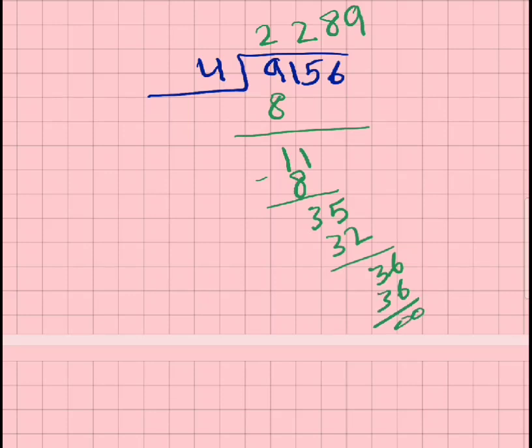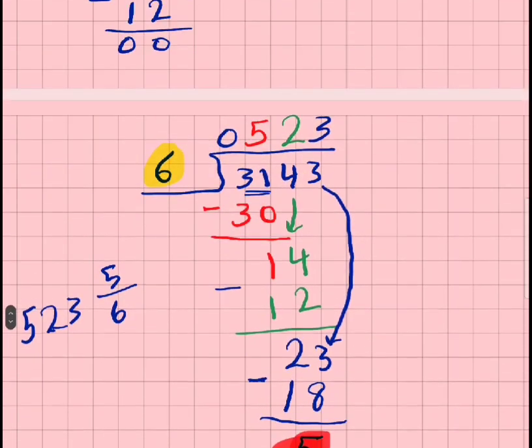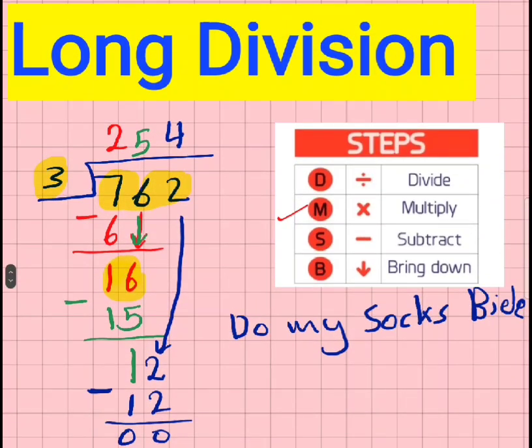So there's our answer: 2289. And that's how you go through and do long division without showing all that messy working out beneath. Anyway, that's all there is for this video. Now for your homework.